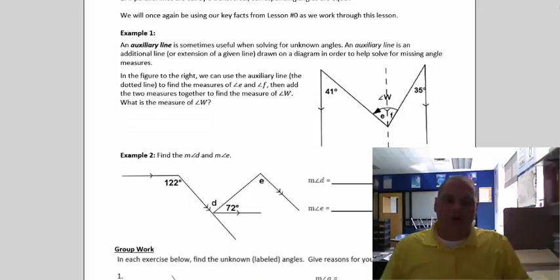So the first thing we want to talk about is something called an auxiliary line. An auxiliary line is sometimes useful when solving for unknown angles. An auxiliary line is an additional line or extension of a given line drawn on a diagram in order to help solve for missing angle measures. So see this diagram right here? This dotted line here was not really there. So you've got to pretend it wasn't there. The given diagram really, and you can even draw that, the original given diagram was something like this.